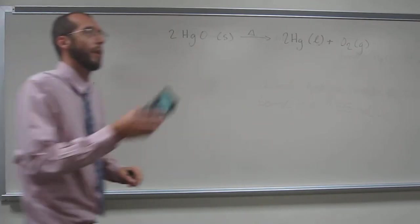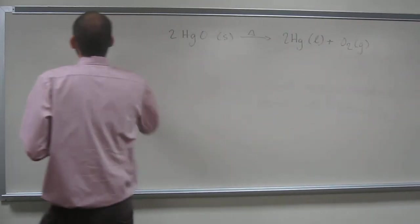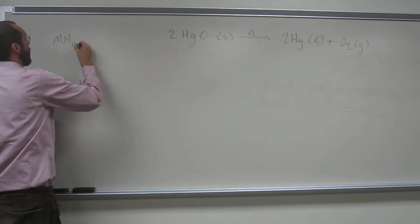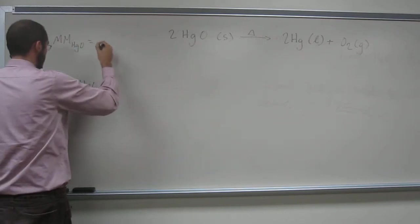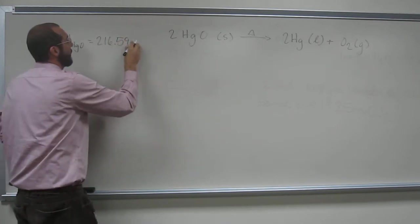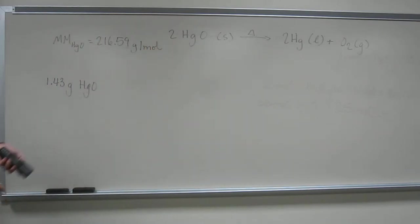So the first thing we're going to have to do is figure out what the mass of mercury two oxide is. How do we do that? We look up at the periodic table. Mercury is 200.59 and we add that to oxygen, we're just going to say 16. Remember, the molar mass of mercury two oxide, we're going to say is 216.59 grams per mole.